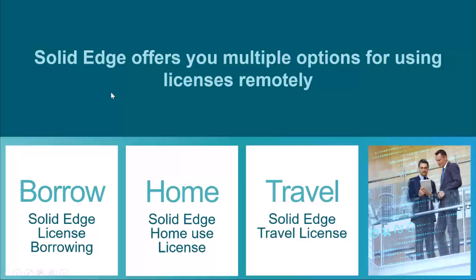With every production license, you get a home use and a travel license, and with floating licenses, you can borrow them. The license borrow allows you to borrow a license from the pool at work and take it home on your machine.